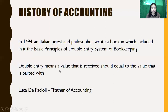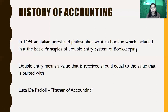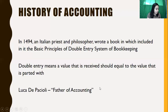In 1494, an Italian priest and philosopher wrote a book which included the basic principles of the double entry system of bookkeeping — the activity of recording transactions. Double entry means a value that is received should equal to the value that is parted with. So when you record transactions, you record the values you received and also the values you gave up, which must be equal. This Italian priest and philosopher was Luca di Pacioli, who was considered the Father of Accounting.